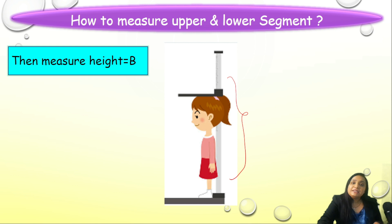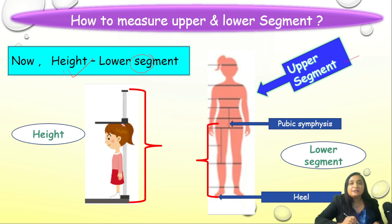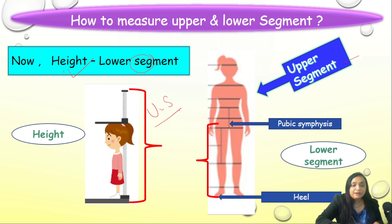After measuring the upper and lower segments and the height, we apply simple math: subtract the lower segment measurement from the height to get the upper segment value. Then we put upper segment divided by lower segment — this is the upper to lower segment ratio.